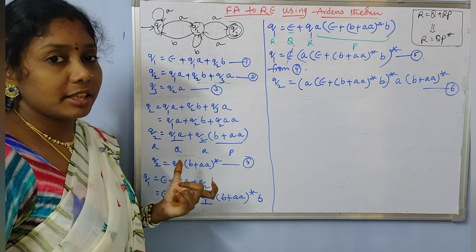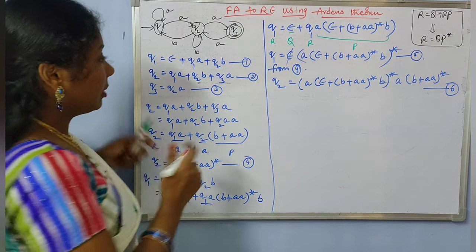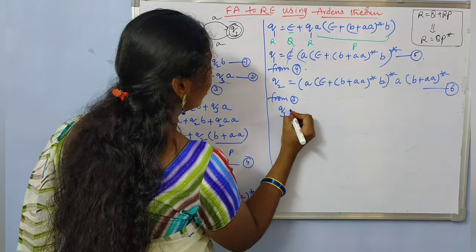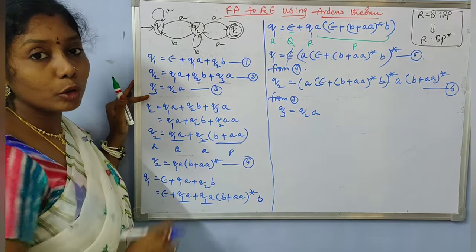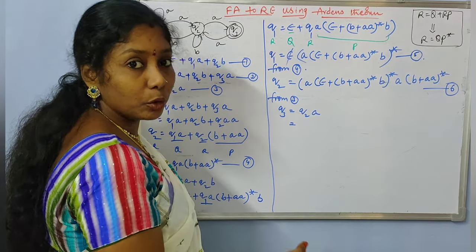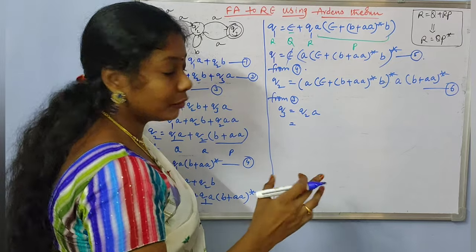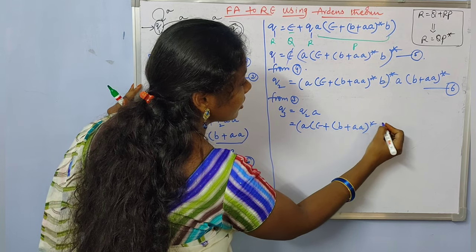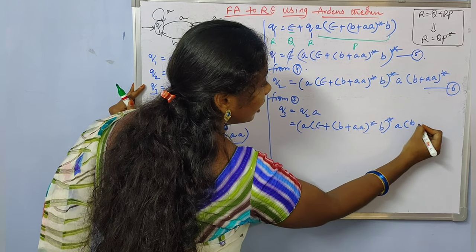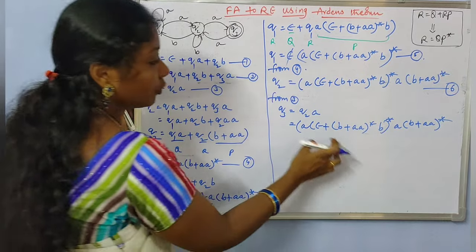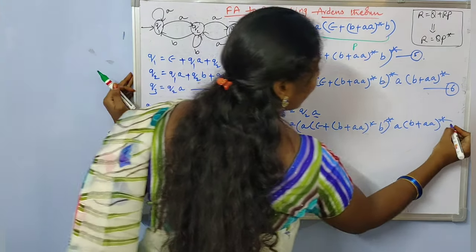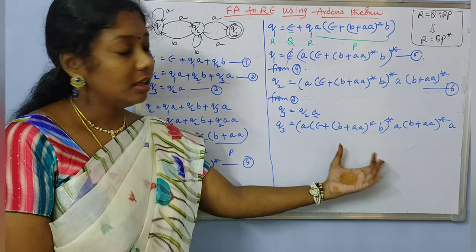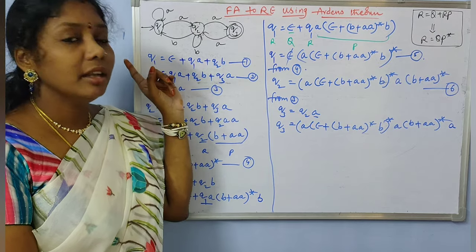From equation 3, Q3 = Q2·A. This is the reachability equation for Q3. Substituting Q2 from equation 6, Q3 = (A·(epsilon + B + AA*·B))*·A·(B + AA)*·A. So Q3 is our required regular expression for the given NFA.